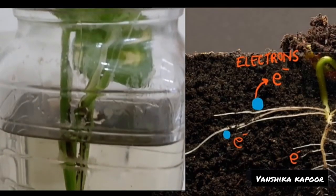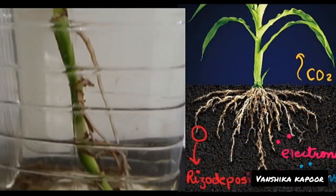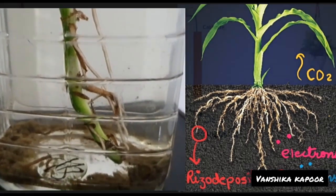Many electrochemically active microorganisms are present around the plant roots which subsequently convert rhizodeposits into electrons, protons, and CO2.